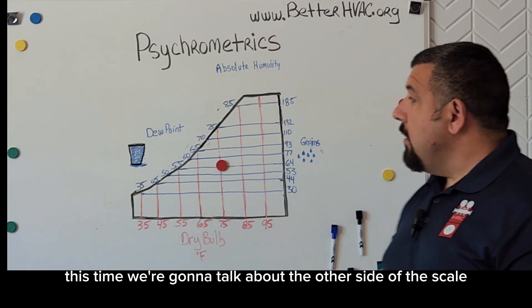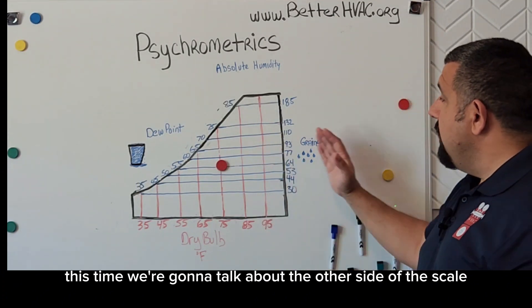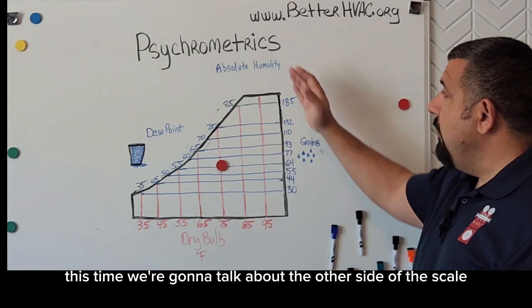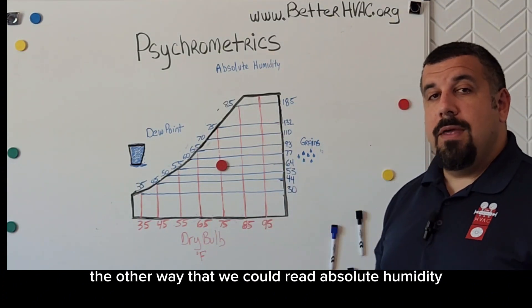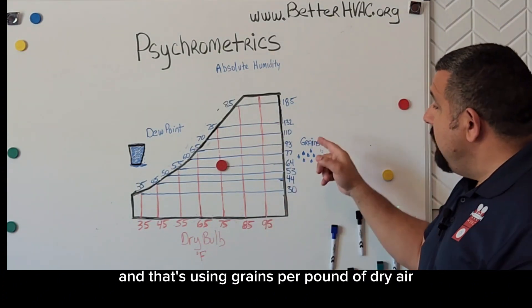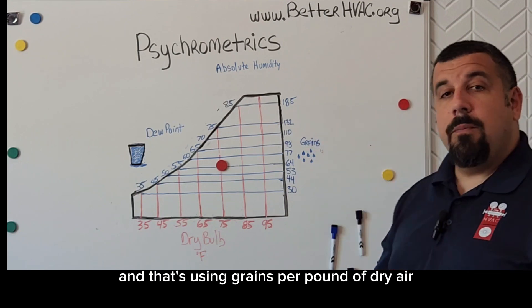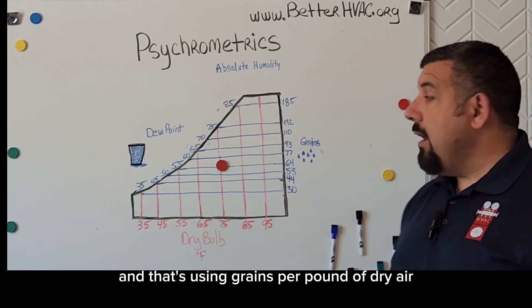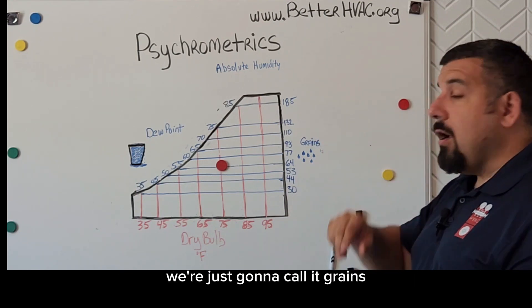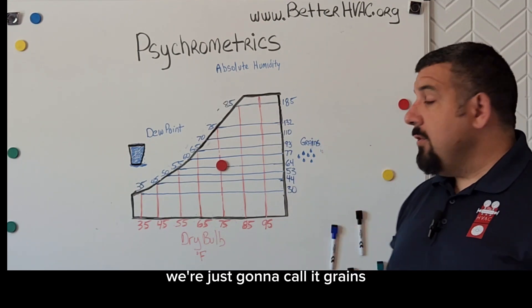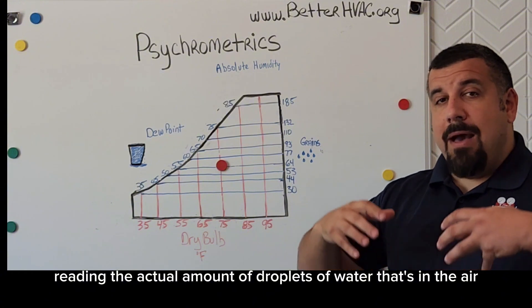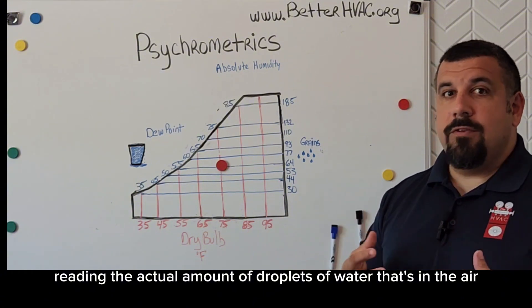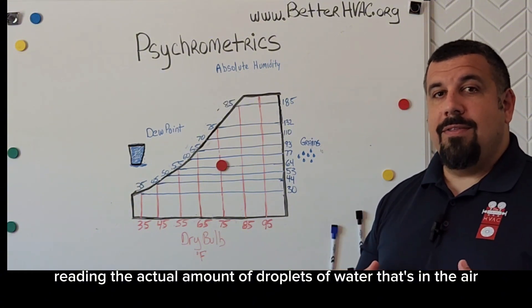This time, we're going to talk about the other side of the scale — the other way that we can read absolute humidity — and that's using grains per pound of dry air. We're just going to call it grains. That is reading the actual amount of droplets of water that's in the air.